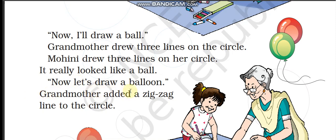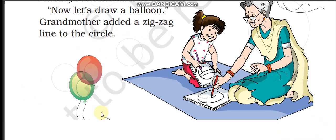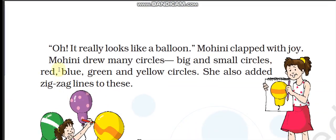Now let's draw a balloon. Ab hum ek balloon banaate hain. Grandmother added a zig-zag line to the circle. Dadi maa ne teedi meedi rekha ko gole mein jooda. Oh, it really looks like a balloon! Vastor mein ek balloon jaisa dikhta hai. Mohini clapped with joy. Mohini khushi se taali bajahi.